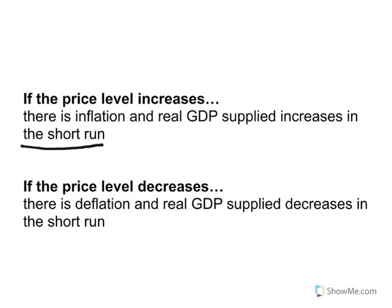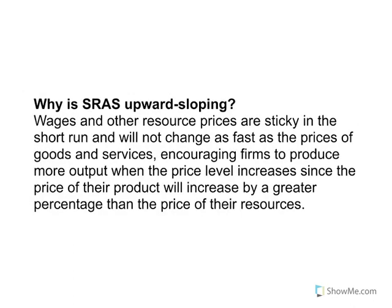The last thing I want to do in this video is explain that relationship: why is it that when the price level increases, so too does real GDP supplied? We can't simply restate it like we did with the law of supply for market supply, because this is a different curve — this is for the whole economy, not just one good or service. So we need something called the sticky wage or sticky resource theory. I'm going to read it and then explain it in detail.